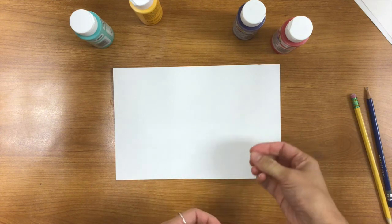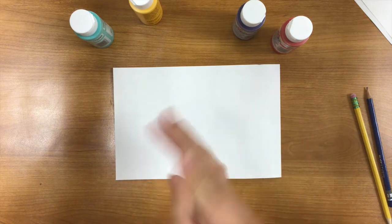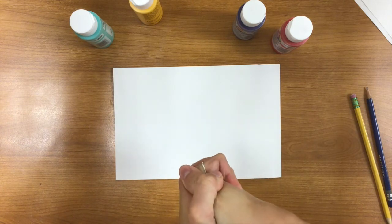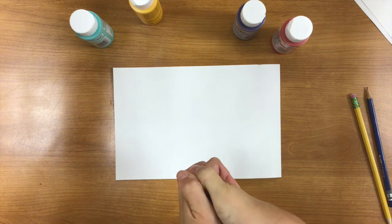So make sure that when you're swirling your colors or squishing them together that you don't really move them around a ton. Otherwise, you're probably going to get a very muddled, boring brown color.